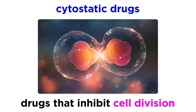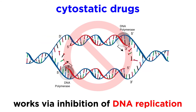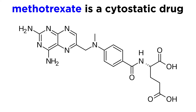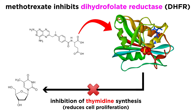The second class of drugs are cytostatic drugs, which means they inhibit cell division. The aim of these drugs is to reduce the proliferation of T and B lymphocytes. This is achieved by various mechanisms focusing on the rate reduction of cell division through the inhibition of DNA replication. In a previous tutorial, we discussed methotrexate, a commonly used cytostatic drug that achieves immunosuppression by inhibiting the enzyme dihydrofolate reductase. The consequence of this is inhibition of thymidine synthesis, a critical deoxynucleoside for DNA synthesis and replication, hence reducing cell proliferation.